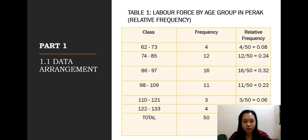This is the table for relative frequency. We can take the frequency divided by the number of classes to get relative frequency. The relative frequencies for the six classes are 0.08, 0.24, 0.32, 0.22, 0.06, and 0.08.